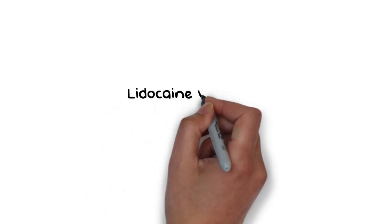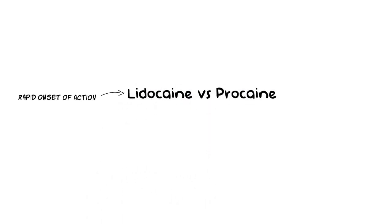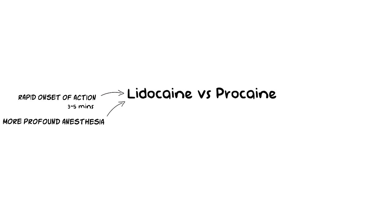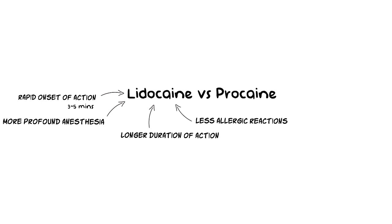Lidocaine, when compared with procaine, possesses a very rapid onset of action. It produces more profound anesthesia, has a longer duration of action, and has a greater potency. In addition to that, allergy to amide local anesthetic is virtually non-existing and extremely rare as compared to procaine, which is an ester-type local anesthetic. These features gave Lidocaine a huge clinical advantage over procaine.